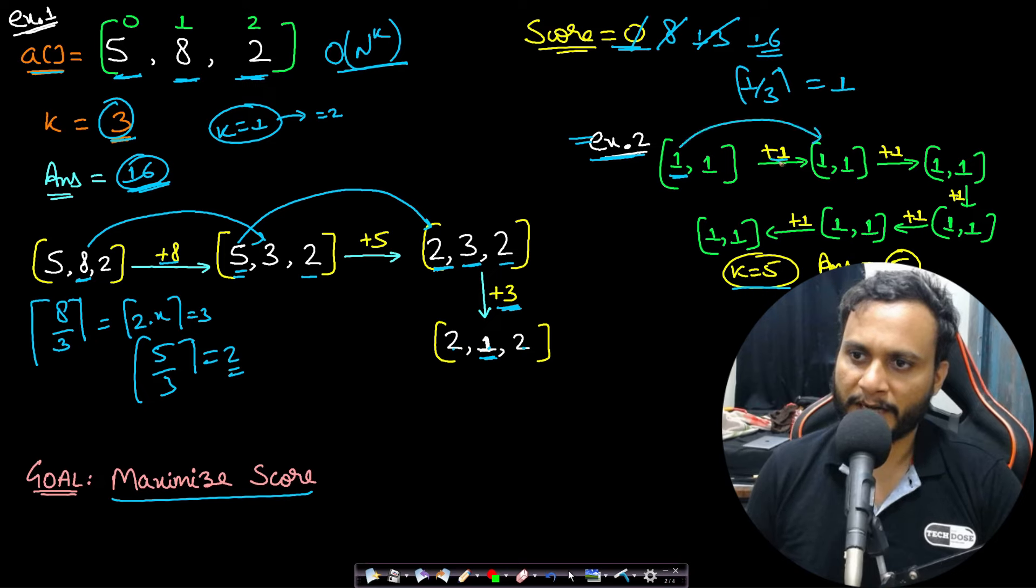This 1 became 1 and we added score 1. Now again you have [1,1], again you can pick any 1. Let's say we pick this 1. Again this will reduce to be 1. So 1 will never get reduced to 0.